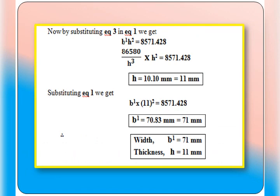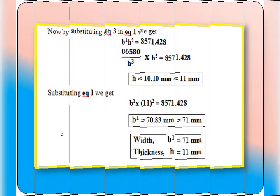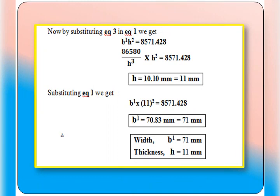Now substituting equation three, B dash = 86,580 / H³, into equation one: (86,580 / H³) × H² = 8571.428. Simplifying gives 86,580 / H = 8571.428, so H = 10.10 mm, which we round up to 11 mm.